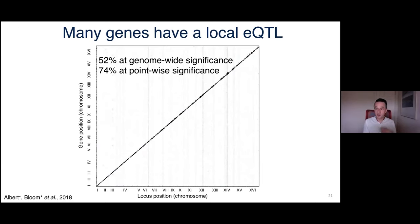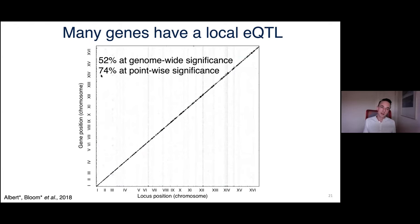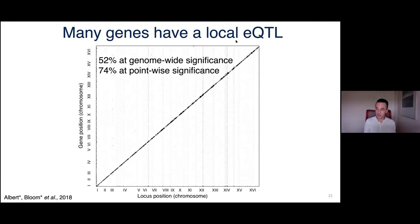We found that more than half the genes in the genome have one of these local eQTLs, where cis-acting variation influences gene expression. This is from just a single pair of strains — there's enough genetic variation to change the expression of half the genes in the genome.